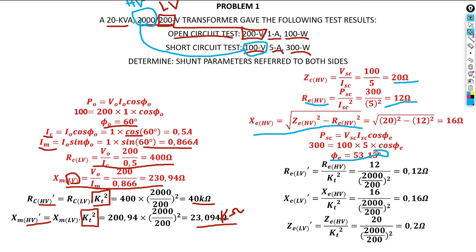When referencing values from the high voltage to the low voltage side, we divide — as proved in the previous video. We divide everything because we are moving from higher to lower voltage.